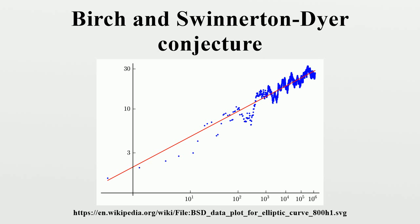If the rank of the curve is greater than zero, then the curve has an infinite number of rational points. Although Mordell's theorem shows that the rank of an elliptic curve is always finite, it does not give an effective method for calculating the rank of every curve. The rank of certain elliptic curves can be calculated using numerical methods, but these cannot be generalized to handle all curves. An L-function L can be defined for an elliptic curve E by constructing an Euler product from the number of points on the curve modulo each prime p. This L-function is analogous to the Riemann zeta function and the Dirichlet L-series defined for a binary quadratic form, and is a special case of a Hasse-Weil L-function.